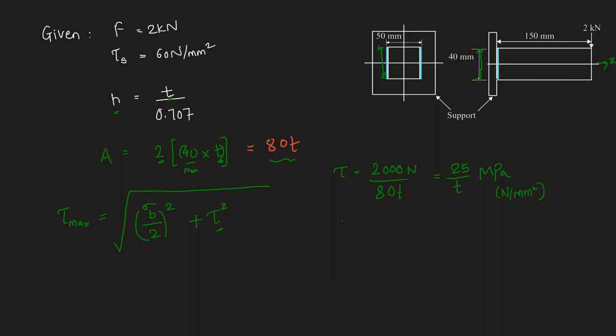Now we will find a bending stress sigma b. Sigma b using the pure bending equation can be written as m into y by i. Moment m can be written as 2 kilo newton into the distance 150 millimeter. So it will be 2000 into 150 newton millimeter into y will be nothing but half of the height of the weld which is 20 millimeter. So this will be 20 divided by moment of inertia we will take only for the area that is resisting the load.